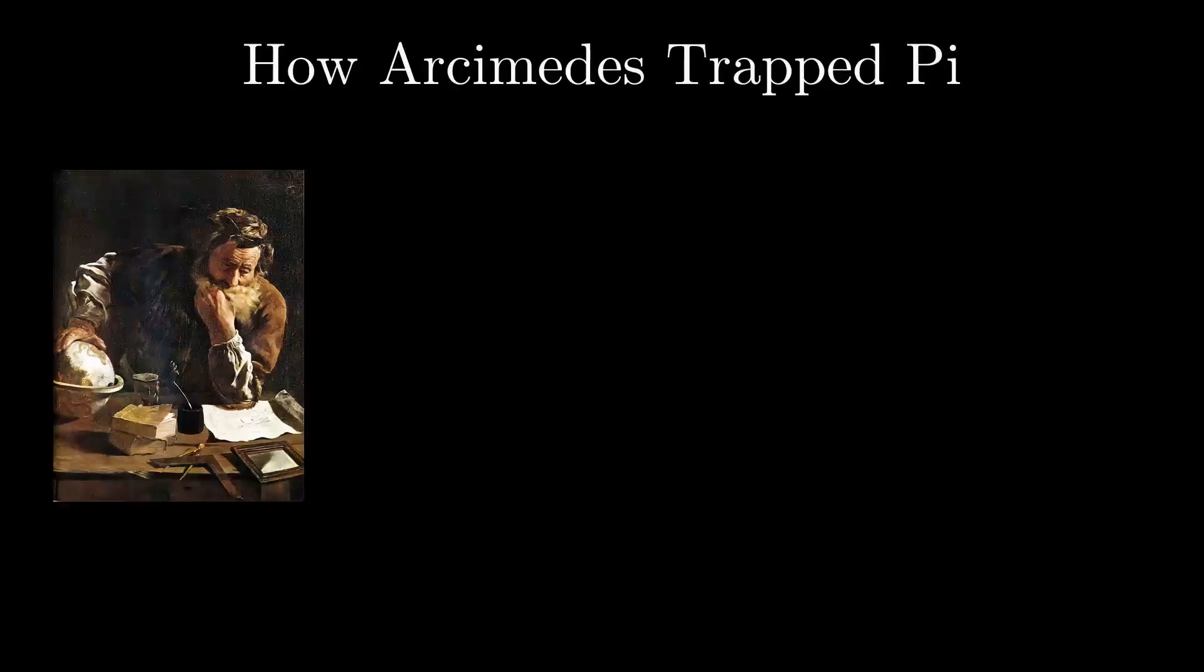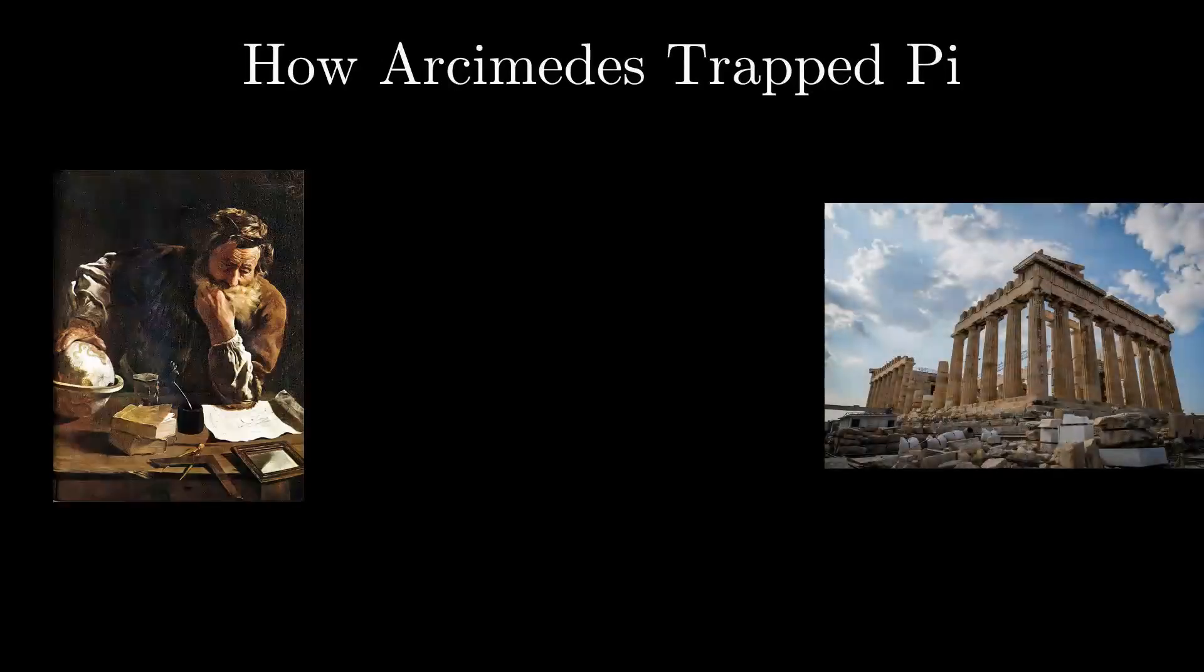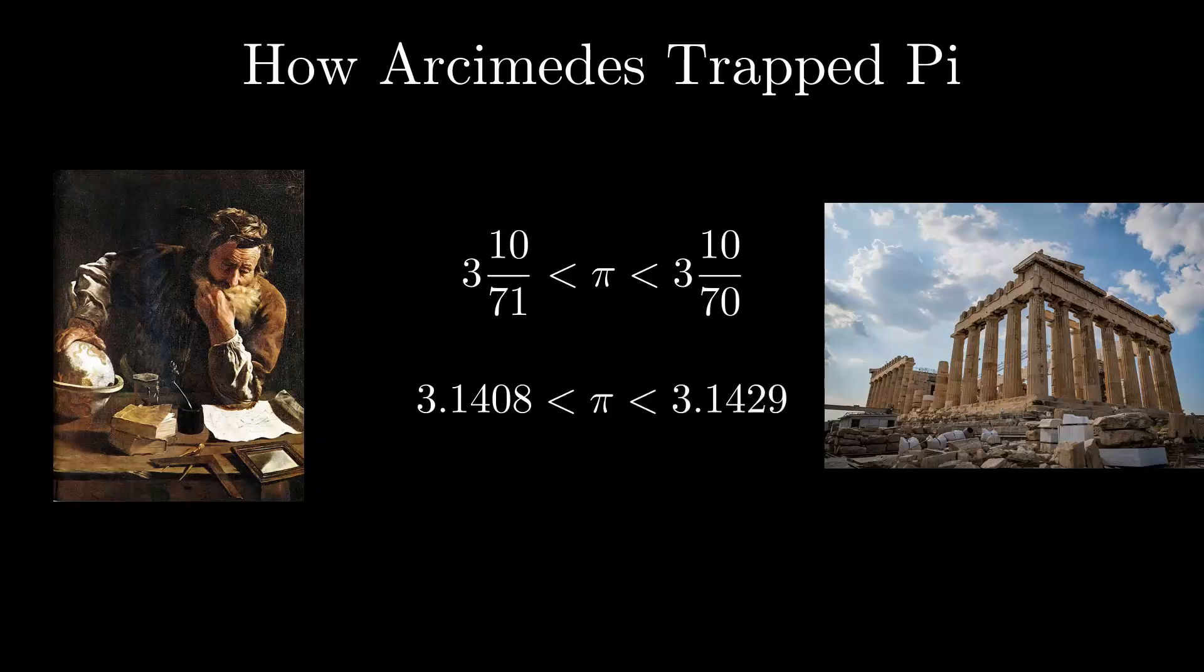Archimedes lived in Greece in the years 287 to 212 BC. He didn't have computers or calculators, he didn't have calculus, he didn't even have decimals with a number zero, but he was able to calculate an estimate for pi that is 99.99% accurate.